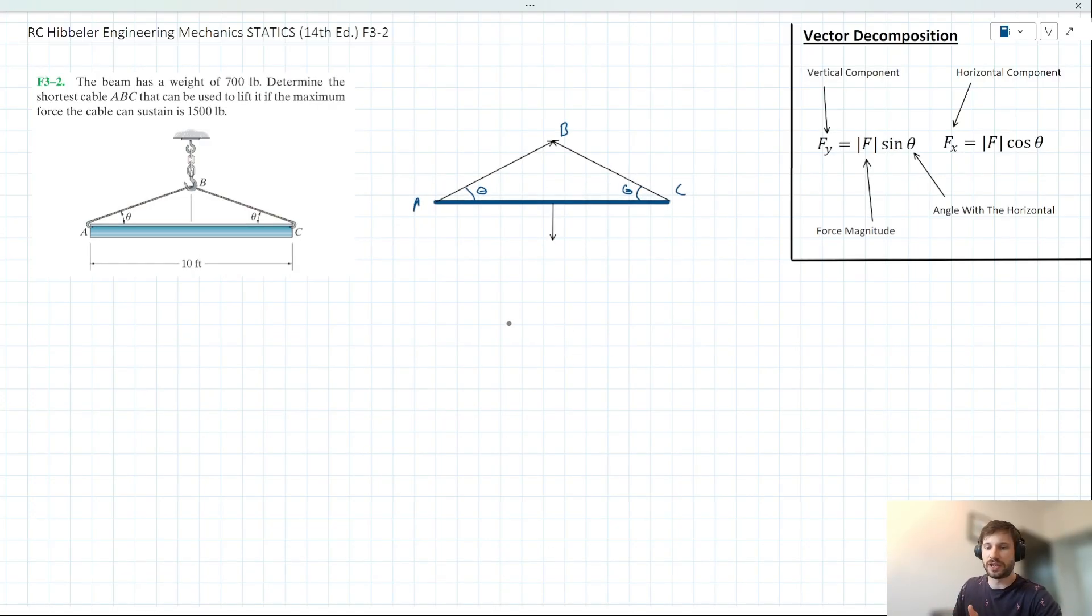For this problem, the only forces that we're concerned with are these three. We've got the tension in cable AB, even though it's all part of cable ABC, we've got the tension in BC, and we've also got the 700 pound weight of the beam here.